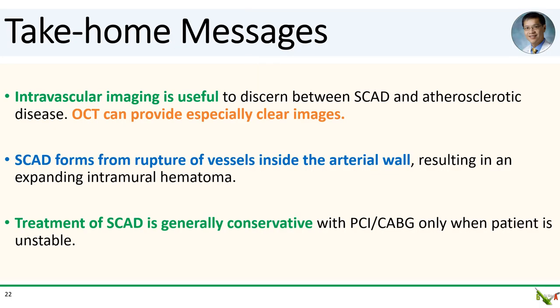Take-home messages: intravascular imaging can be very useful when trying to distinguish between SCAD and atherosclerosis — this can be important because the treatment strategy can be very different, and as we saw in this case, OCT can provide especially clear images. We went over a possible mechanism for SCAD formation starting with the spontaneous rupture of blood vessels inside the arterial wall, which causes an intramural hematoma that can in some cases get so big that it eventually tears the intima. And remember that the treatment of SCAD is almost always conservative unless the patient is or becomes unstable, at which point PCI or CABG can be considered.